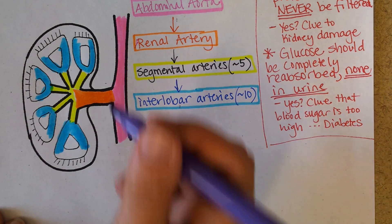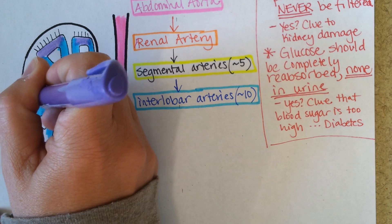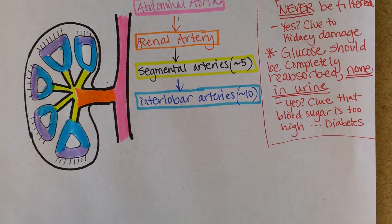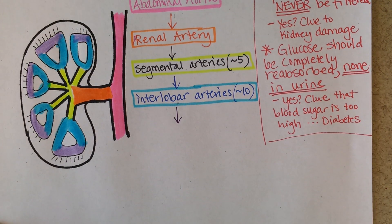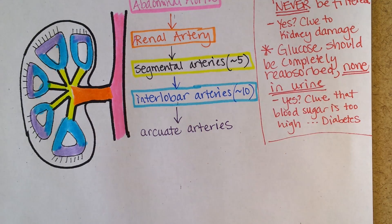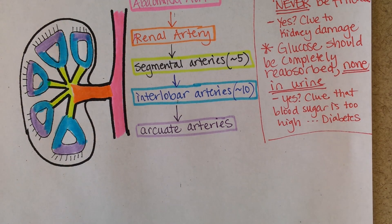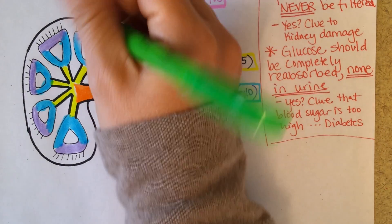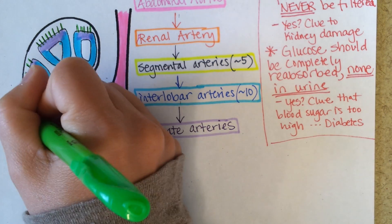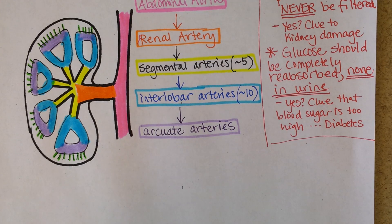Each of those interlobar arteries actually arcs around the top of each lobe, so the blood joins back up together — this oxygenated blood carrying wastes and many other things — out toward the filtering apparatus. We call those the arcuate arteries, named because they arch or arc over the top of each lobe. Off the top of each lobe, there are arteries that go straight out like the spokes on a wheel, radiating out toward the outside of the kidney in the cortex. We call them cortical radiate arteries.